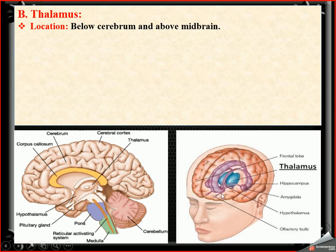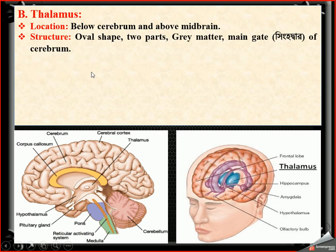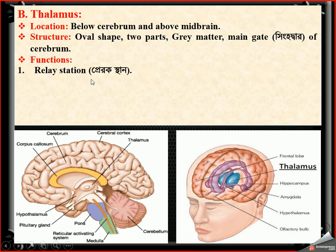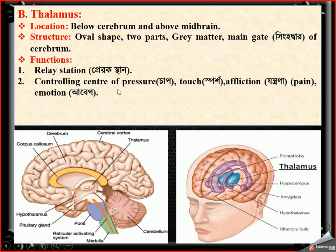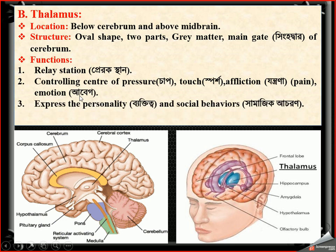The second part of the forebrain is the thalamus. Its location is below the cerebrum and above the midbrain. Its structure is oval-shaped, made of two parts of grey matter. It is also called the main gate of the cerebrum. Functions of the thalamus include acting as a relay station, being the controlling center of pressure, pain, and emotion, expressing personality and social behaviors.